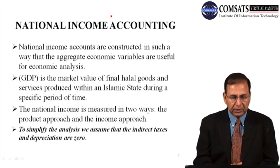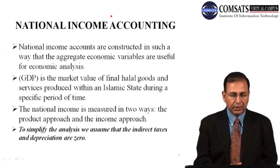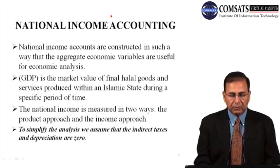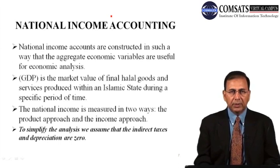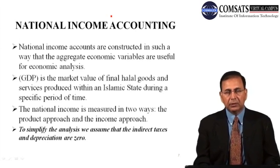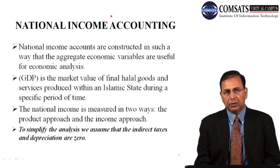National income is measured in two ways. Number one, the product approach, and number two, the income approach. The product approach means calculating the value of all final goods and services — their final value at market price — and this is national income calculated by the product approach. The income approach means GDP is calculated from payments made to the factors of production involved in the production process.